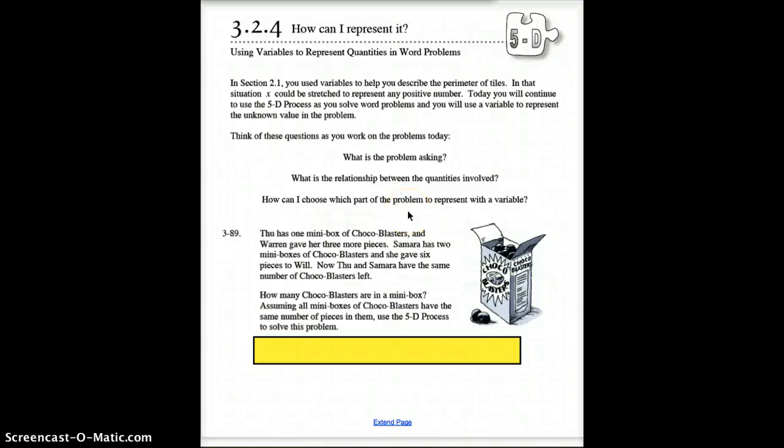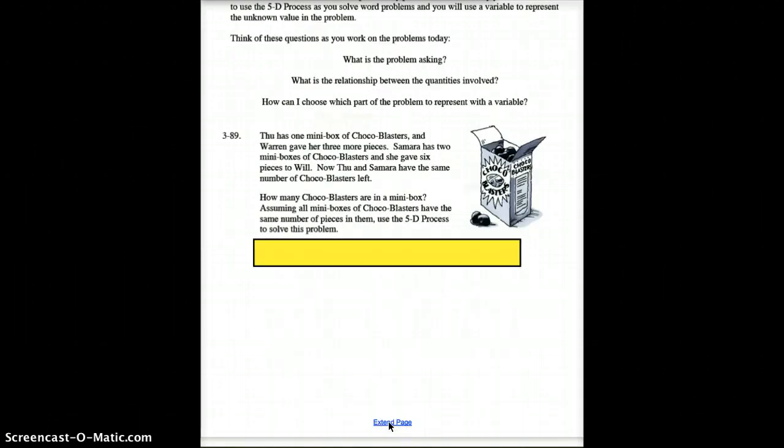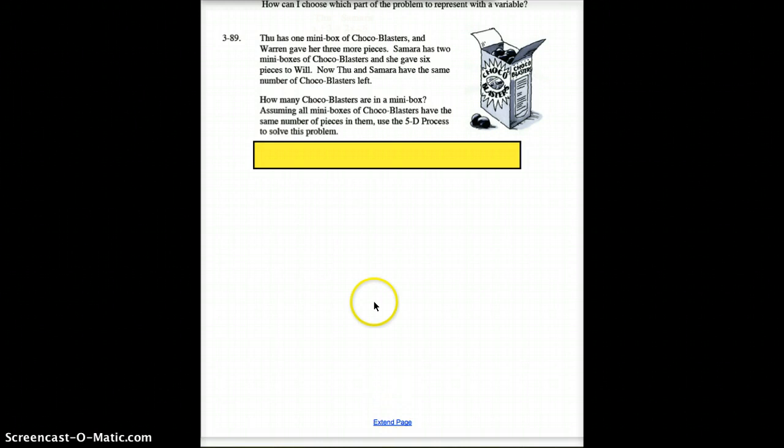What are we doing today? Alright, the goal is to be able to take what we've been doing in the 5D process and be able to convert that into variables so we can solve equations. So we're trying to get a little bit away from guess and check, and we're going to start moving that into variables so we can start solving equations.